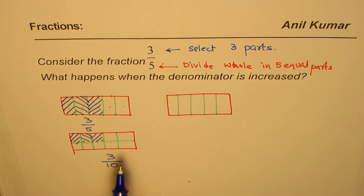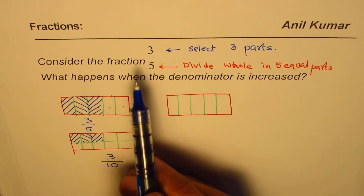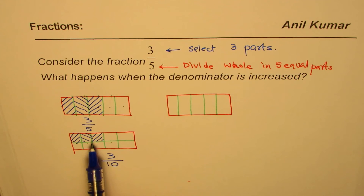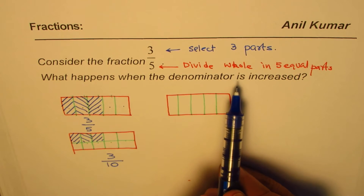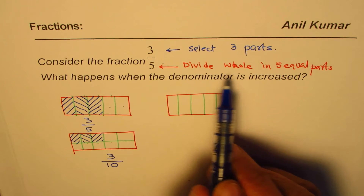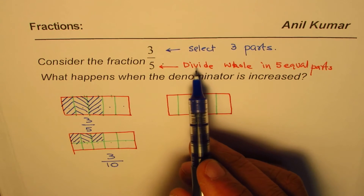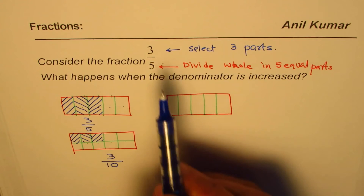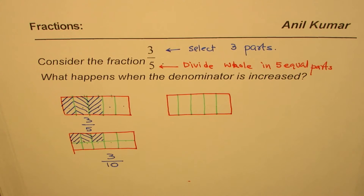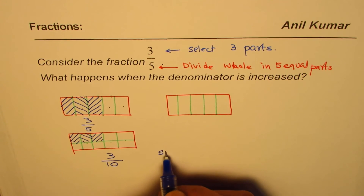You can clearly see that if the denominator is increased, the fraction decreases. Three out of 10 — you are getting smaller and smaller pieces when you increase the denominator. The share becomes smaller because you are dividing the whole into more parts, but you still only get three of those smaller pieces.